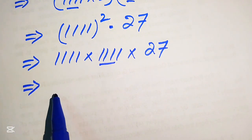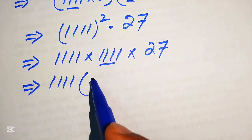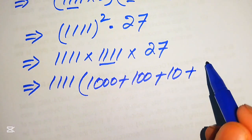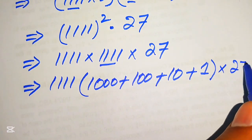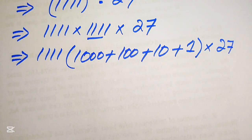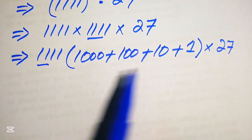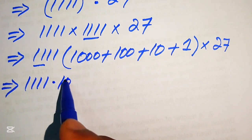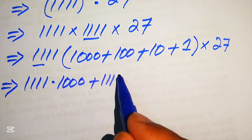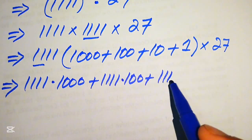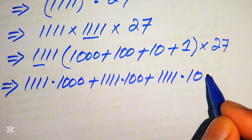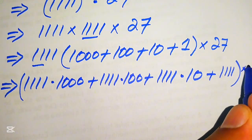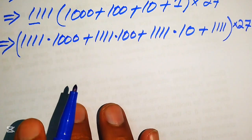We break 1111 as 1000 plus 100 plus 10 plus 1. Now we multiply this by 27. Distributing, it becomes: 1111 multiplied by 1000, plus 1111 multiplied by 100, plus 1111 multiplied by 10, plus 1111 multiplied by 1, which is also 1111. The whole result is then multiplied by 27.